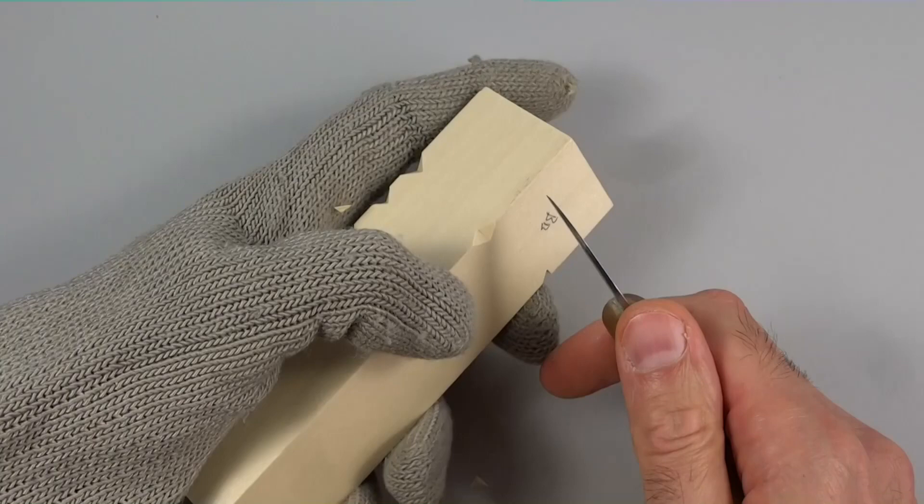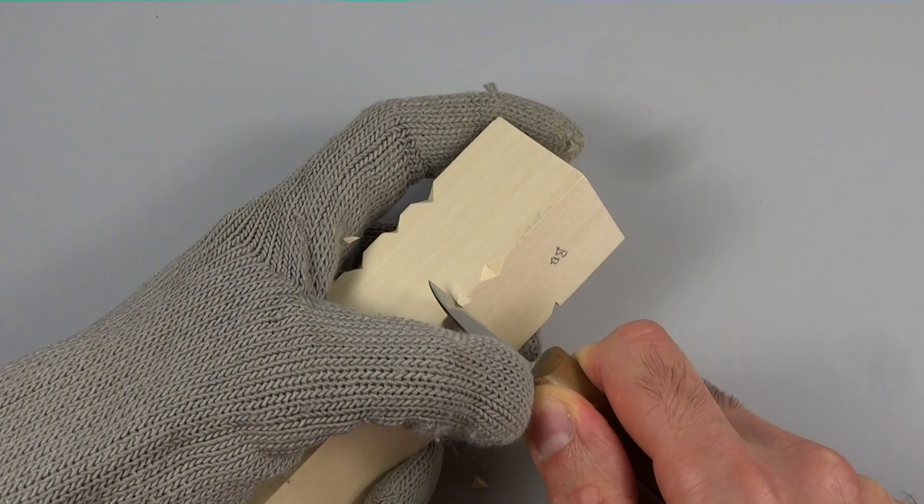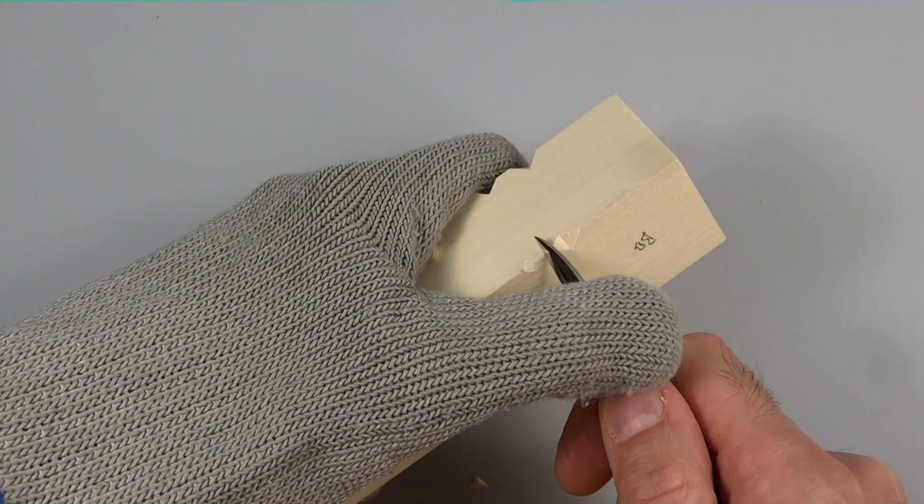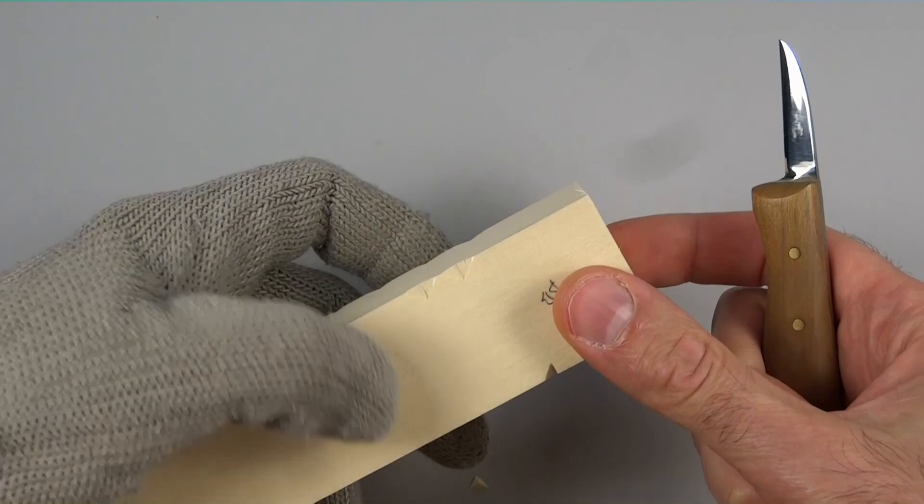The second way to do this is not using a stop cut. Watch this. Take the knife on an angle, push in. Go on the other side now, on the same angle, push in.